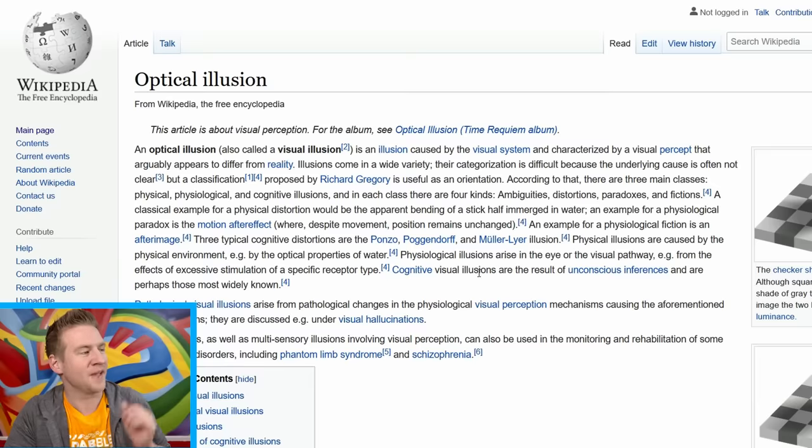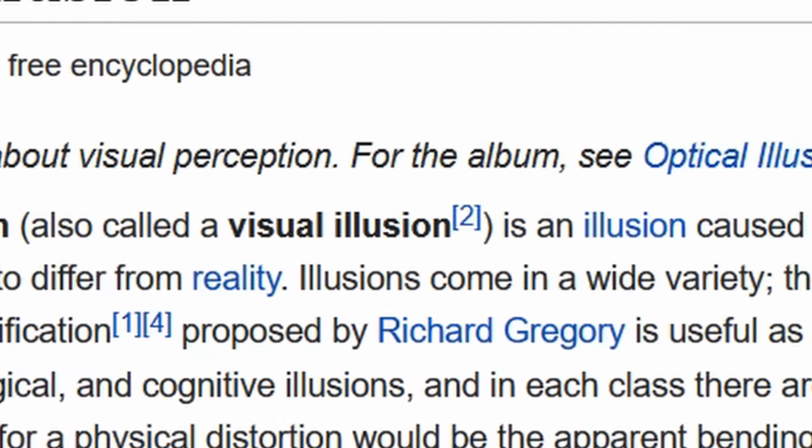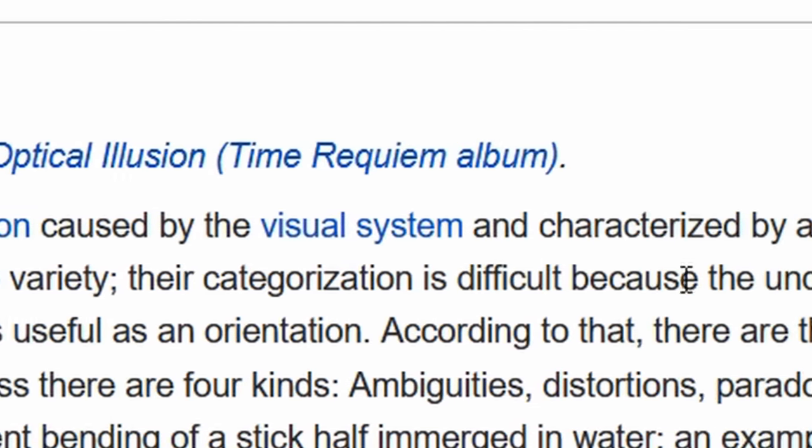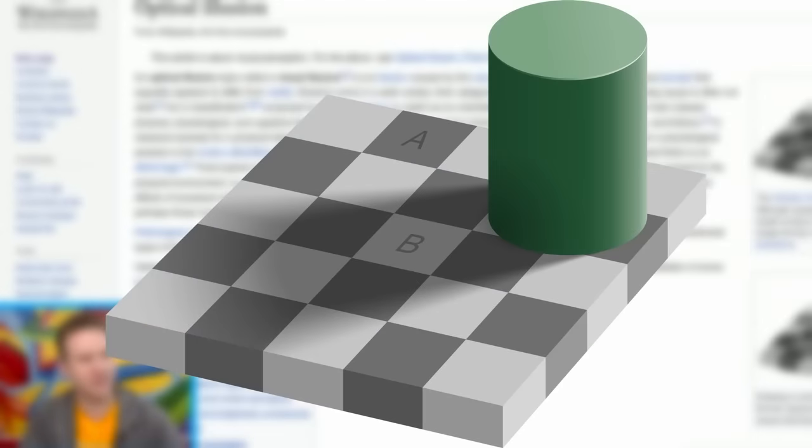In this video we're gonna try to create some epic 3D eye trickery optical illusions. I've seen these around before, but let's start at the beginning with the Wikipedia article. An optical illusion is an illusion caused by the visual system. For example, this is a classic one - the eye thinks that A is darker than B, but actually they are exactly the same.